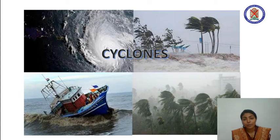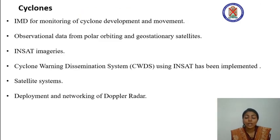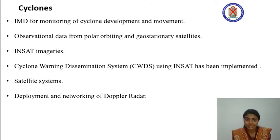Storm surges are by far the greatest killers in cyclones, which destroy coastal areas, and the very strong winds associated with them cause widespread damage to life and property. IMD monitors cyclone development and movement, and the conventional observation data is supplemented by observational data from polar orbiting and geostationary satellites. Infrared imageries obtained at hourly intervals are immensely useful for monitoring cyclones.